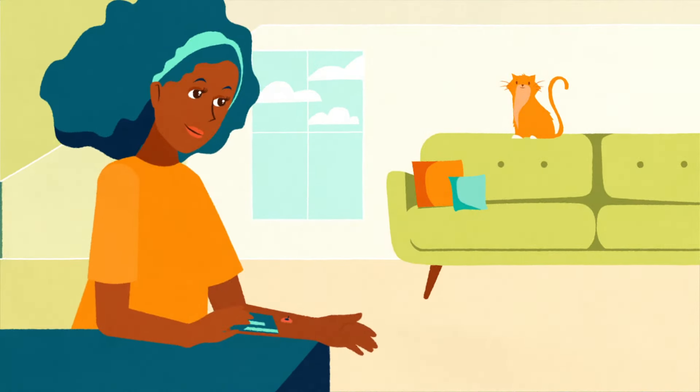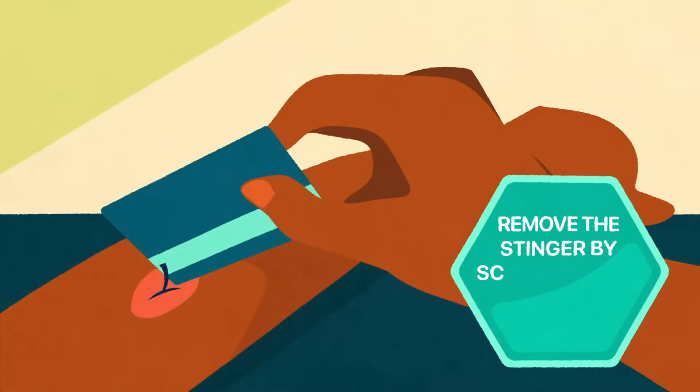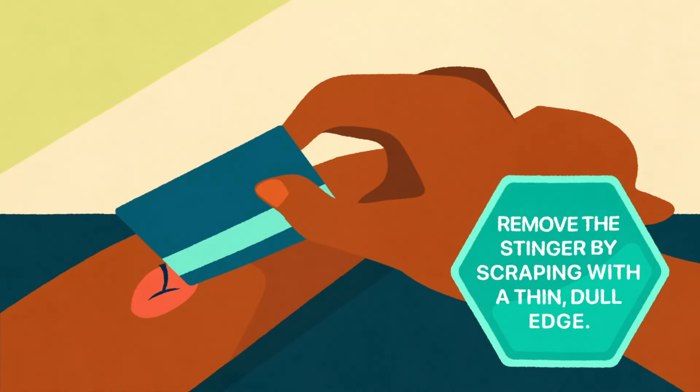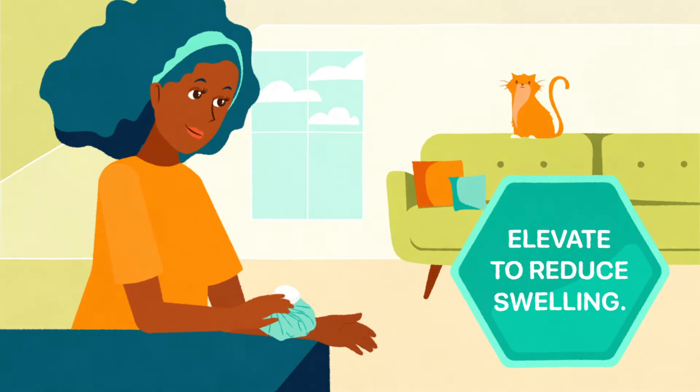Here are the correct ways to treat a bee sting. Remove the stinger with a dull-edged object like a butter knife or credit card. Use a blunt object to gently scrape across the affected area. Once the stinger is removed, use a cool compress like an ice pack over the affected area. Elevate the area to reduce swelling.